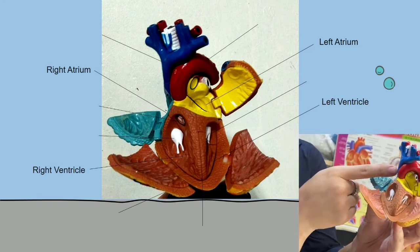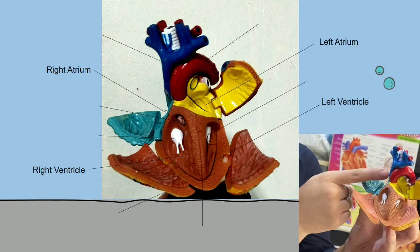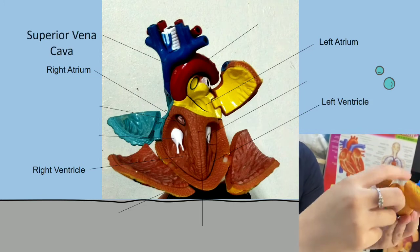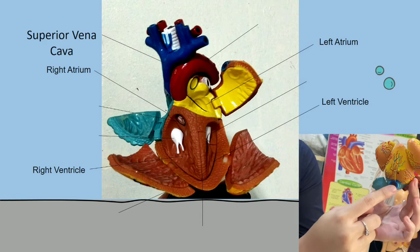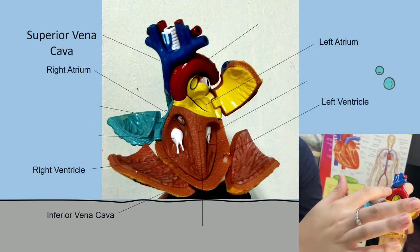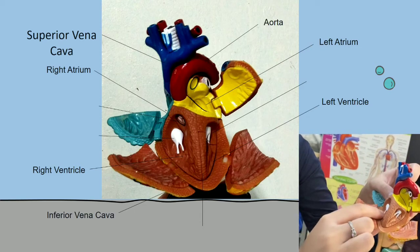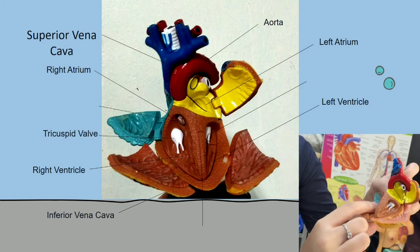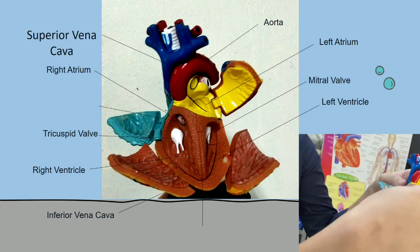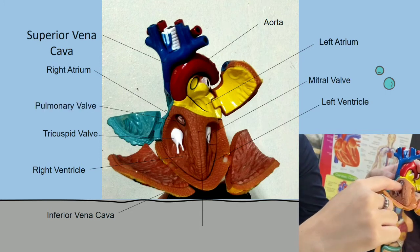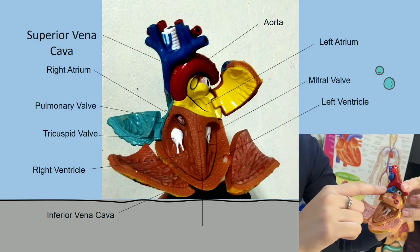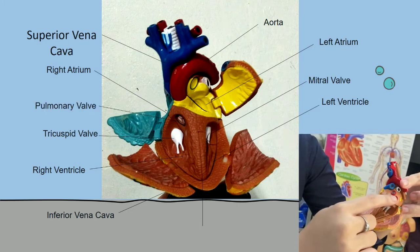This is called the superior vena cava and this is called the inferior vena cava. This is the aorta, the tricuspid valve, the mitral valve, the pulmonary valve, the pulmonary artery, and the pulmonary vein.